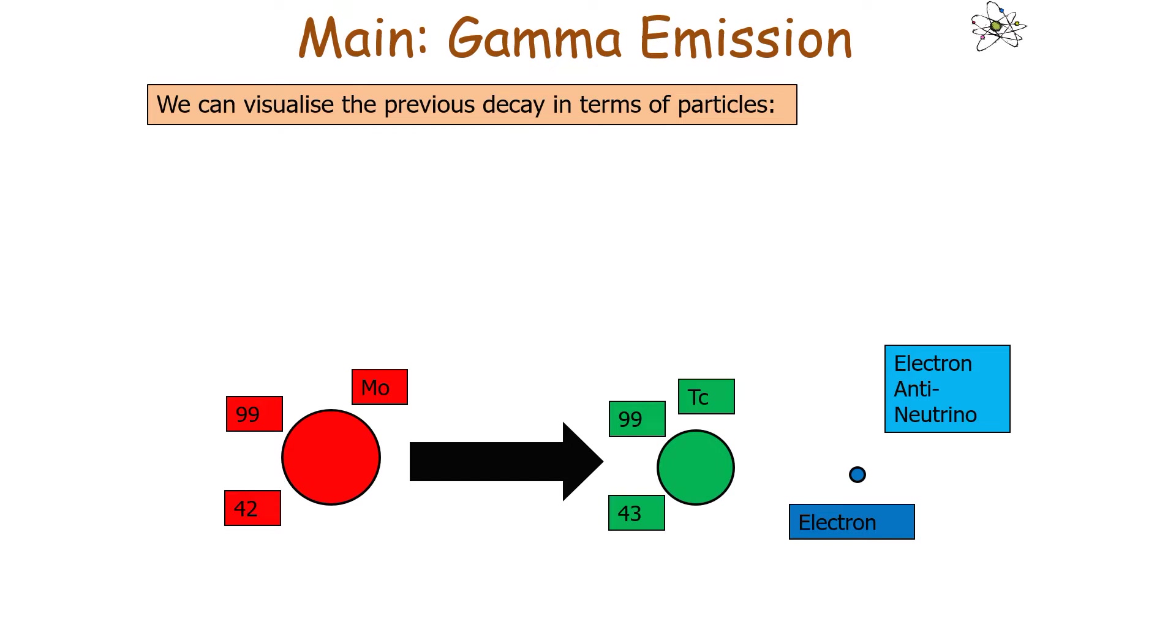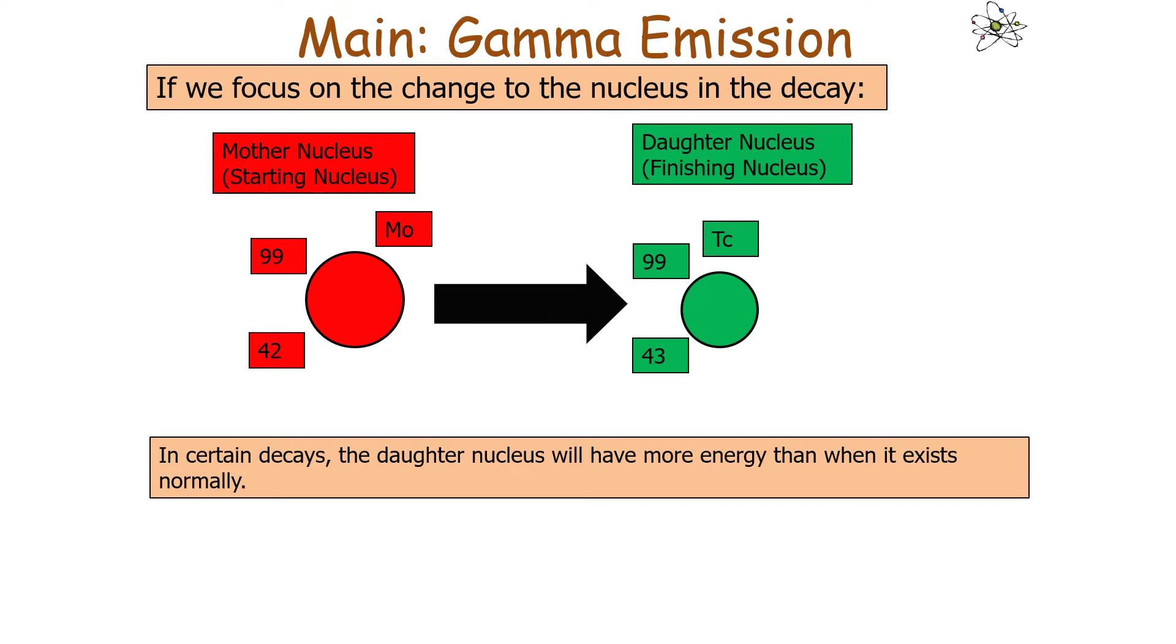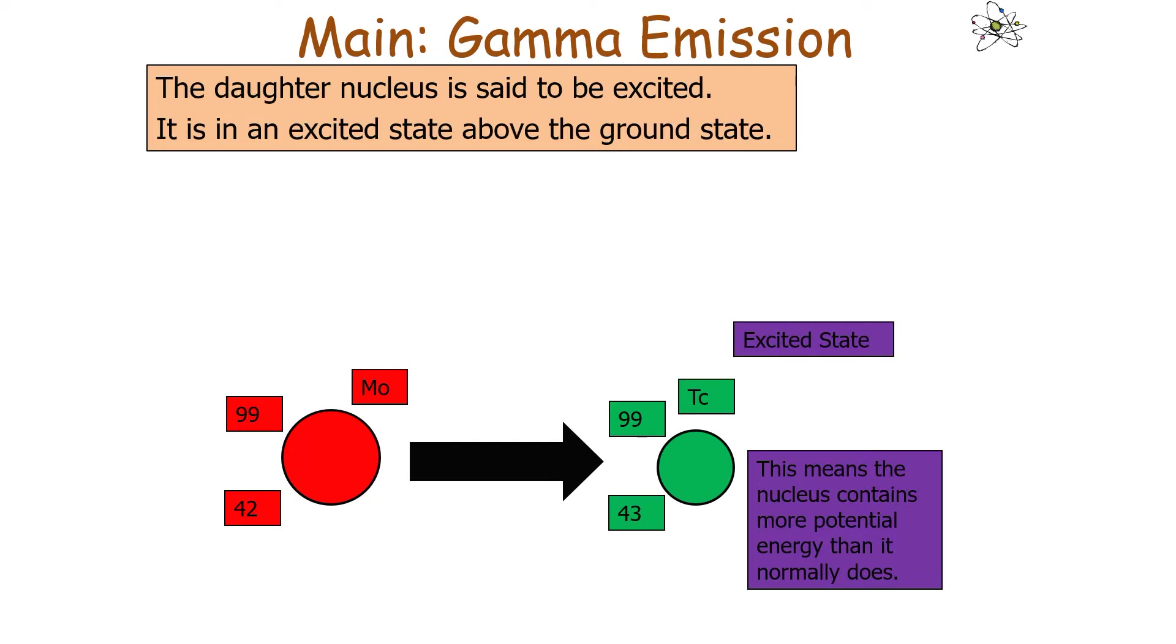If we just focus on the change of the nucleus in the decay, we've got our starting or mother nucleus and then our finishing or daughter nucleus. In certain decays, the daughter nucleus will have more energy than if that nucleus was just existing normally. In this case, we would say the daughter nucleus is excited.